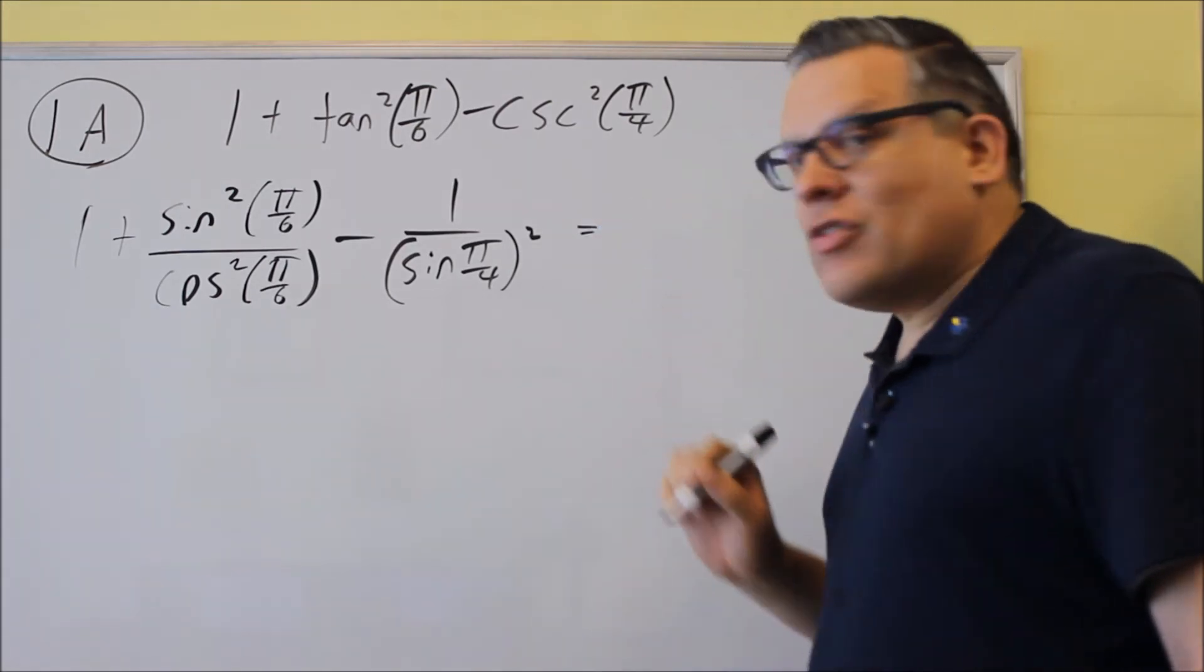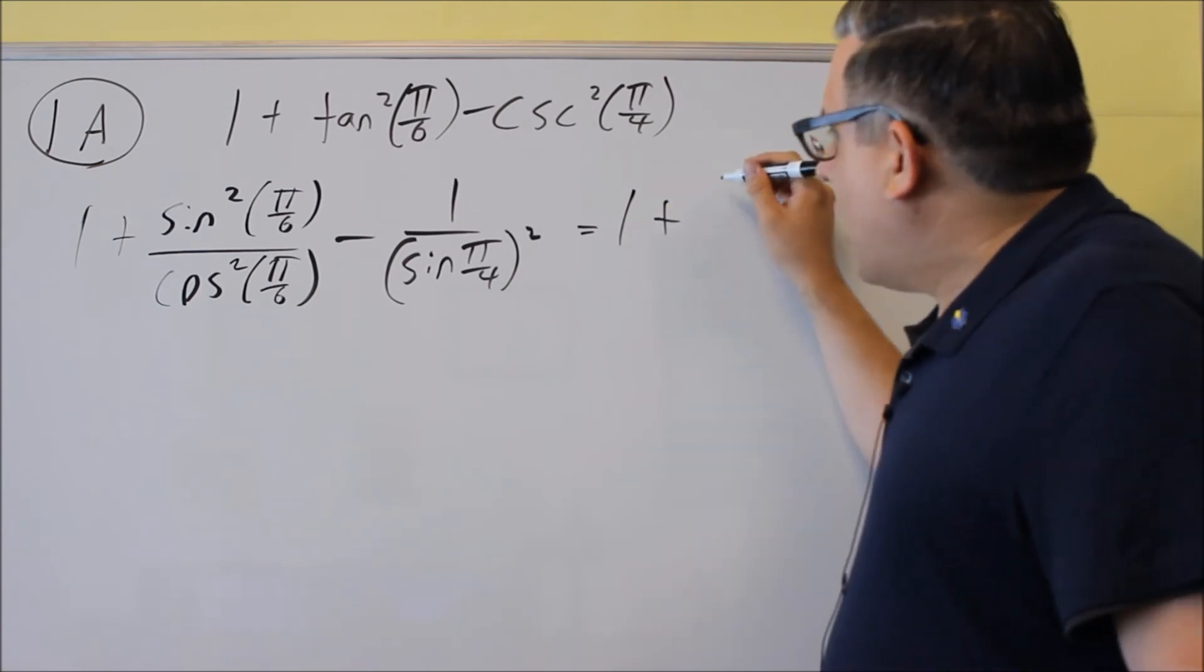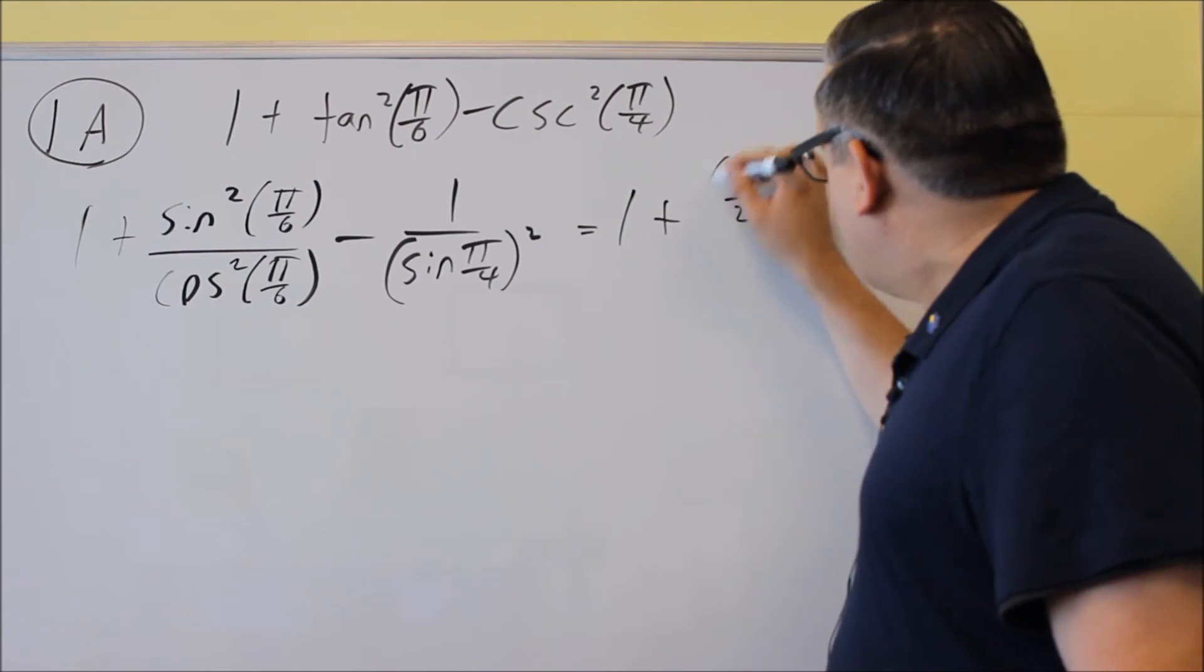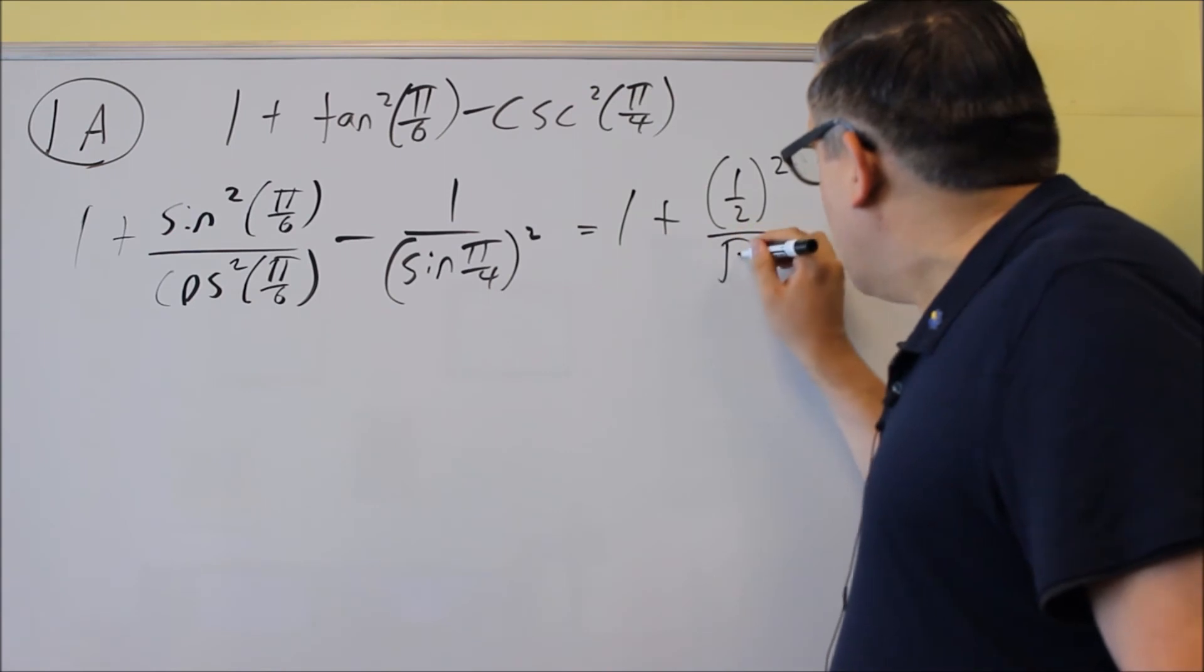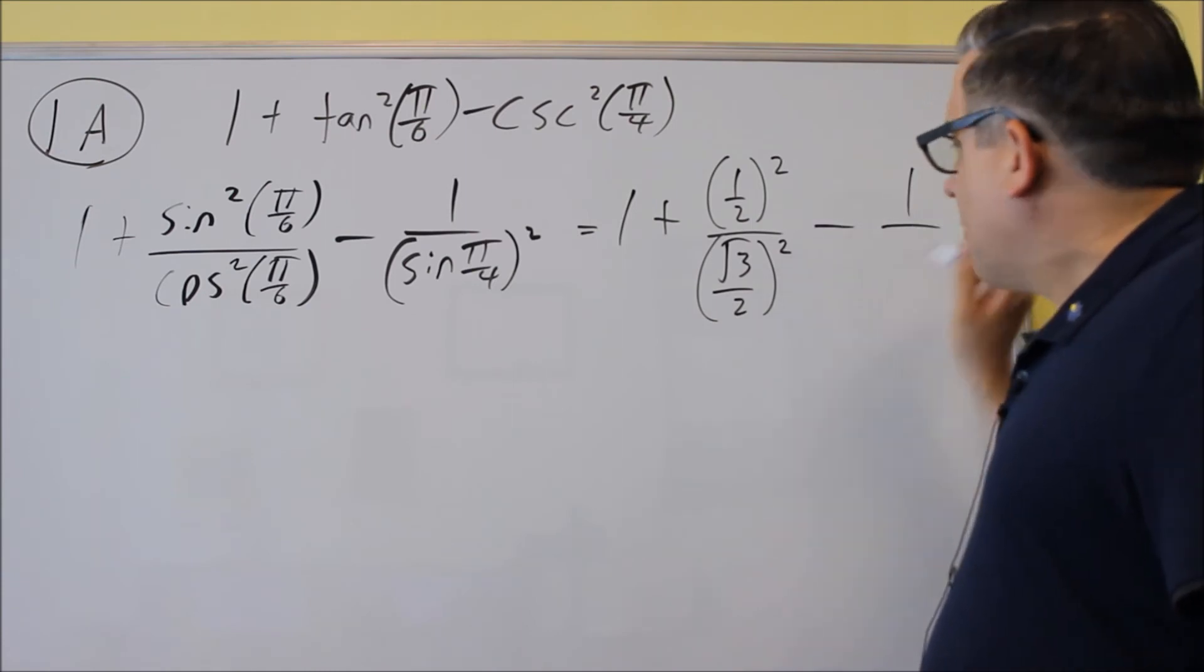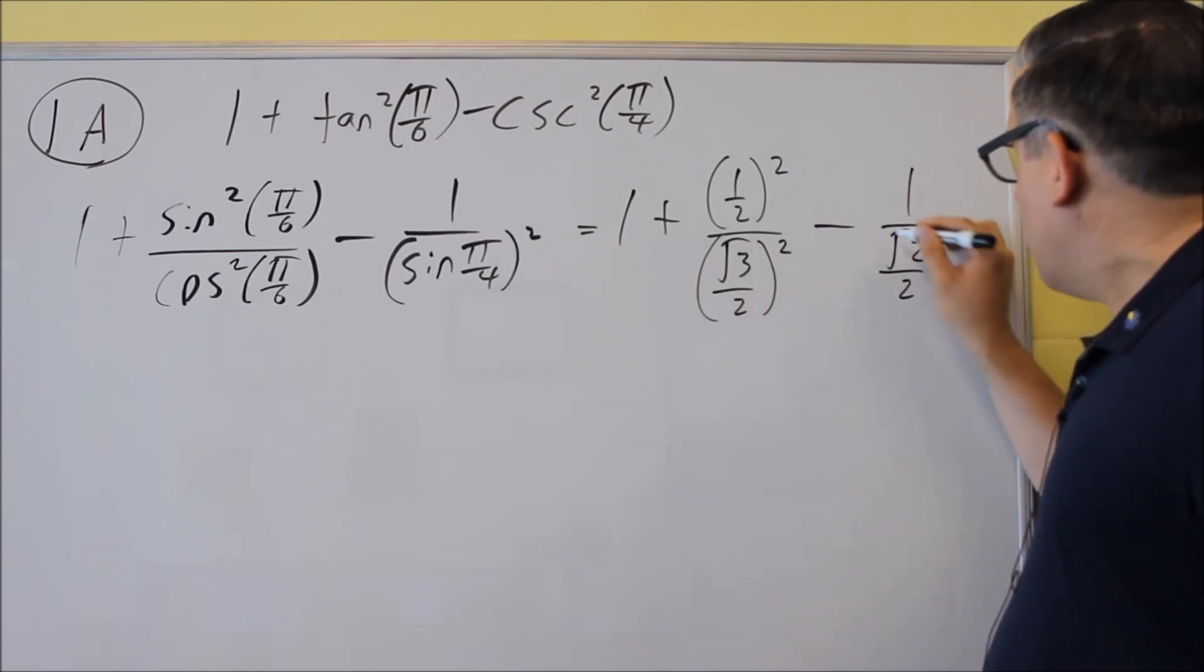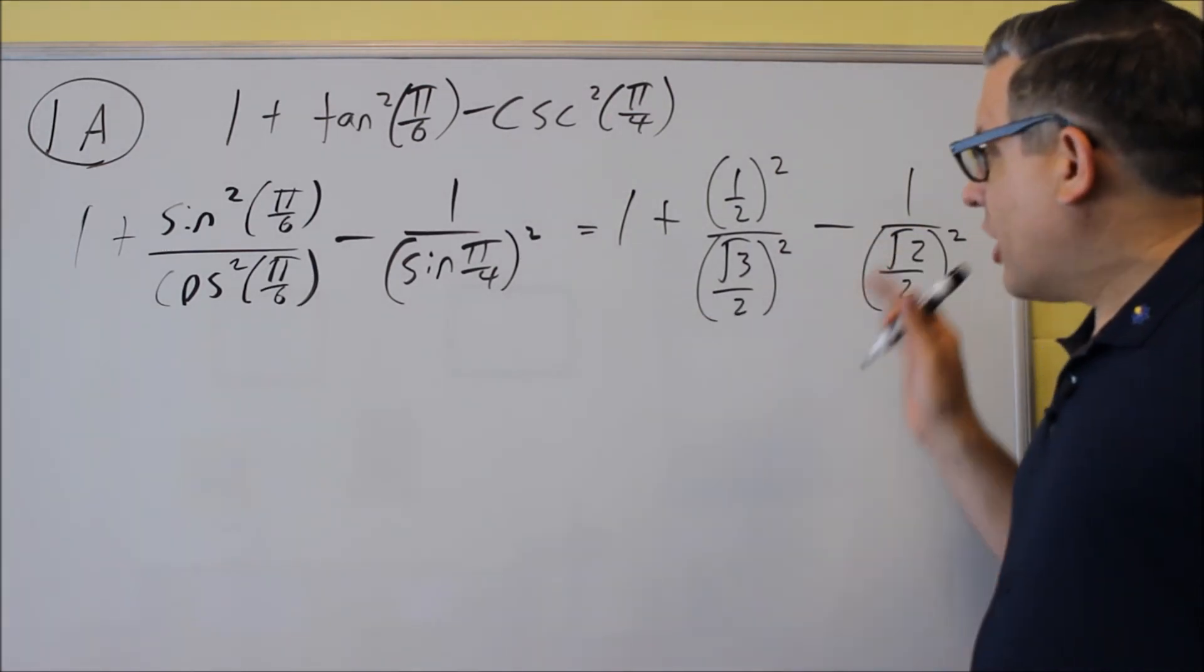Now let's go ahead and put in the values for the unit circle for each one of those. So there's a 1 plus, and then I have the value for sine pi over 6 is 1 half, now don't forget to square that one. On the bottom, we have cosine pi over 6, that value is square root of 3 over 2, and then you're going to be squaring that one. Next we've got this, 1 over the value for sine pi over 4 is square root of 2 over 2, and don't forget to square that one.